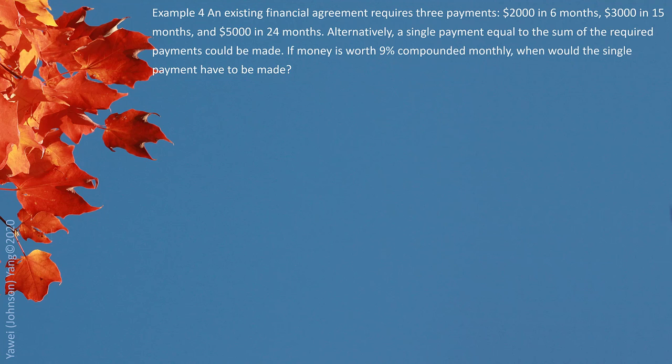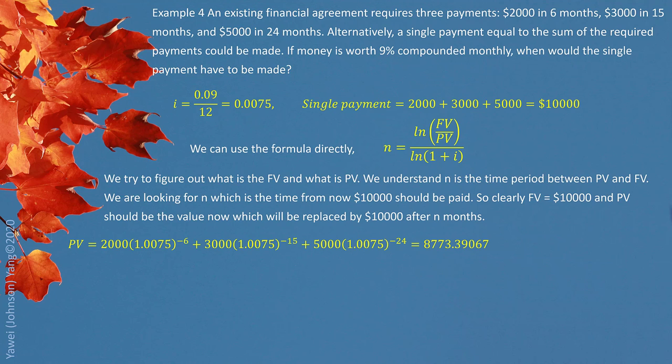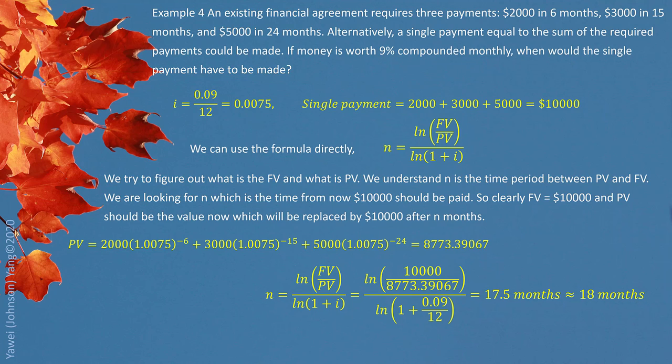We have clear information. $2,000 supposed to be paid in six months. $3,000 supposed to be paid in 15 months. And $5,000 supposed to be paid in 24 months. Here we go. We calculate the present value of these three payments together. And this present value would be equivalent to the future $10,000 happening sometime. We put them in the formula. We find out the time period. 17.5 rounded up 18 months. So the $10,000 should be paid 18 months from now.